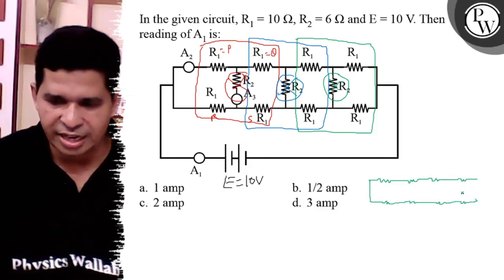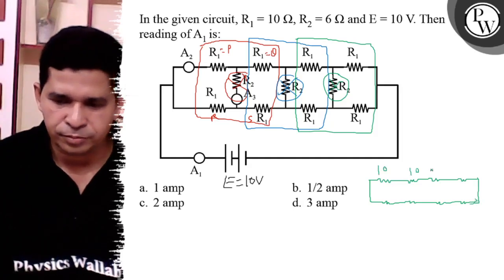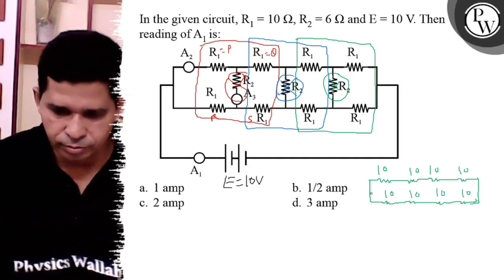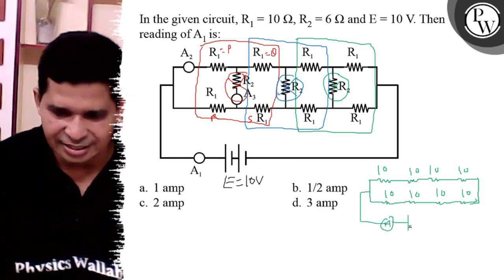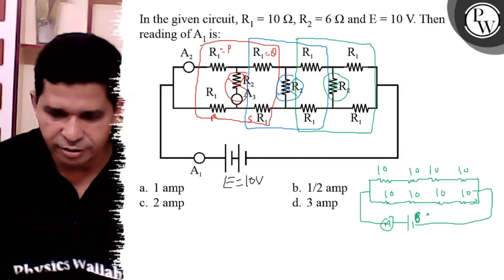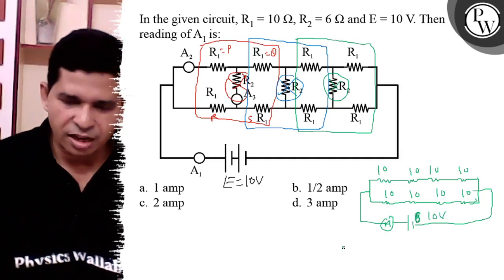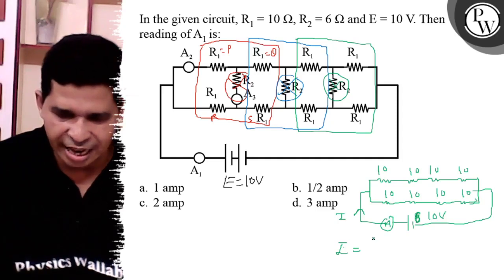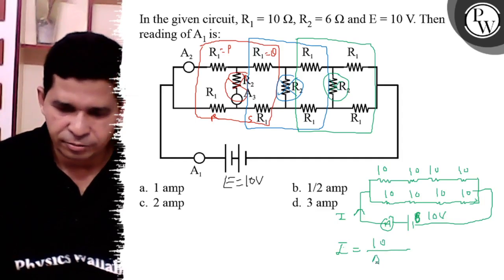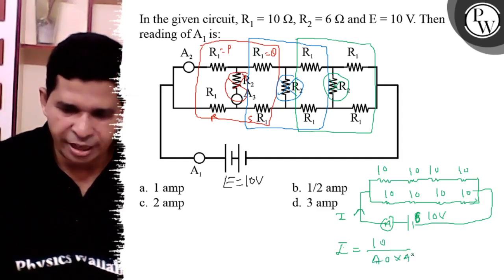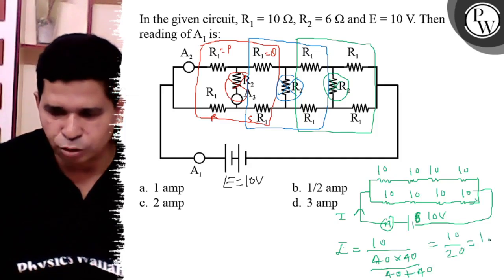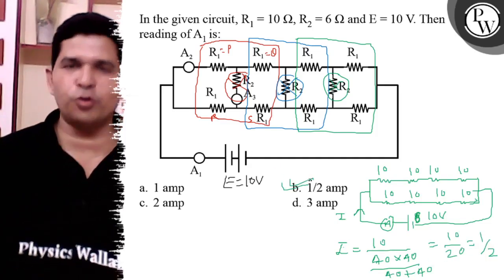We have R1, R1, R1, R1, R1, R1, R1 — all are 10 ohm, so total 40 ohm. These two 40 ohm groups are in parallel, and the battery is 10 volt. The ammeter reading I = 10 volt divided by (40 × 40)/(40 + 40) = 10/20, so the answer is 1/2 ampere. Final answer is B. Thank you, all the best.